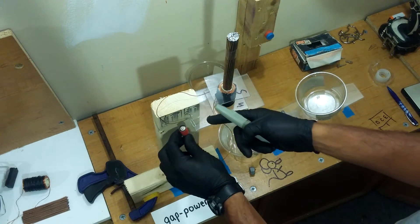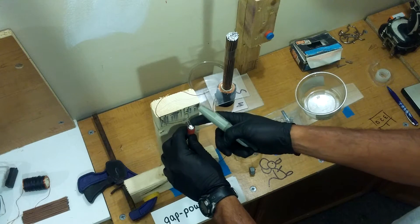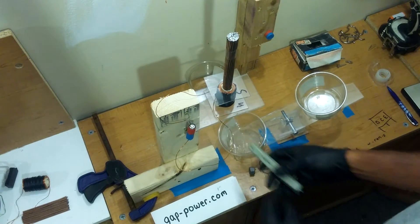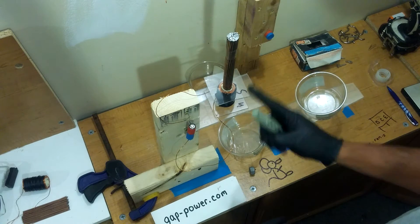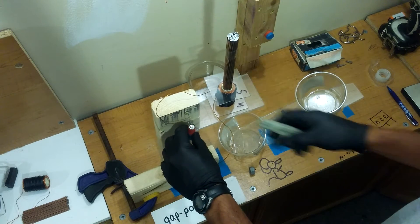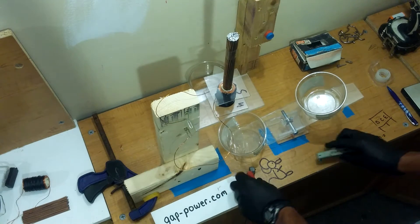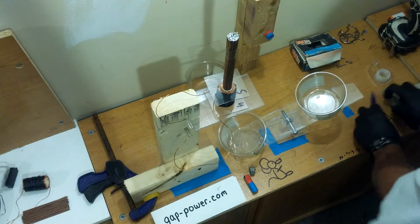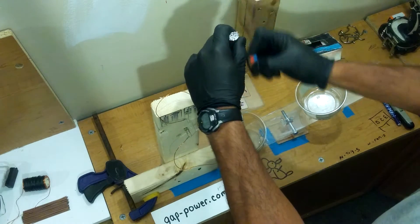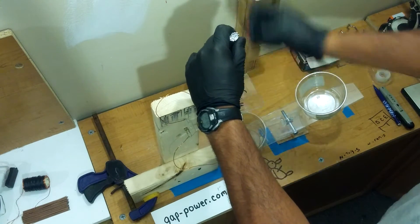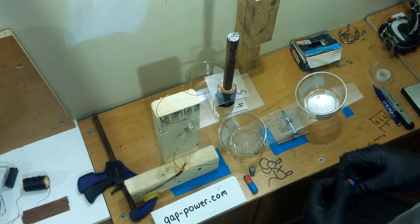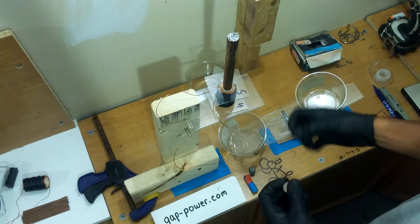We now have north facing up and south down. What I'm doing here is just clearing the charge that the iron core has picked up from the electromagnet being on.